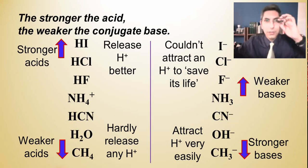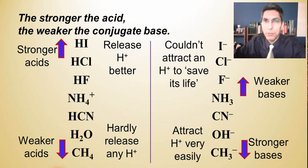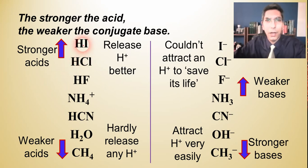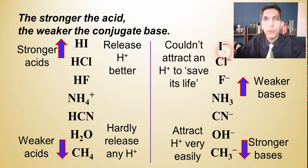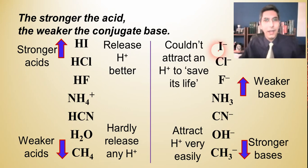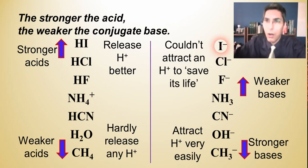An important rule of thumb: the stronger the acid, the weaker the conjugate base. Here we have very strong acids like HI and HCl — among the strongest acids you can have — and their conjugate bases are I⁻ and Cl⁻. These conjugate bases are extremely weak — practically pathetic bases that cannot attract an H⁺ at all.